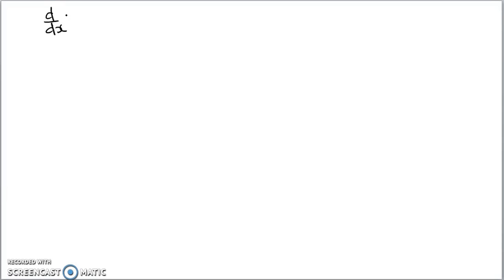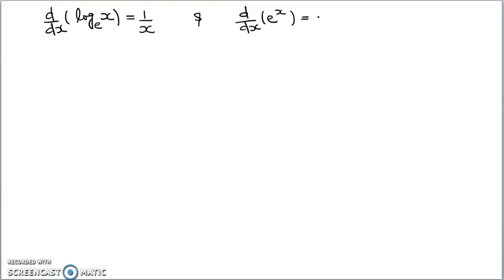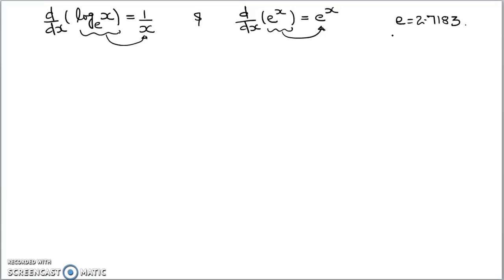Do important relations abhi rai gaite: derivative of a logarithmic function and derivative of an exponential function. We will start with derivative of log x with base e, which is given as 1 by x. Next, derivative of e raised to power x is equal to e raised to power x — the result does not change. When taking the derivative of log x, the base must be e, which represents the exponential constant with value 2.7183.